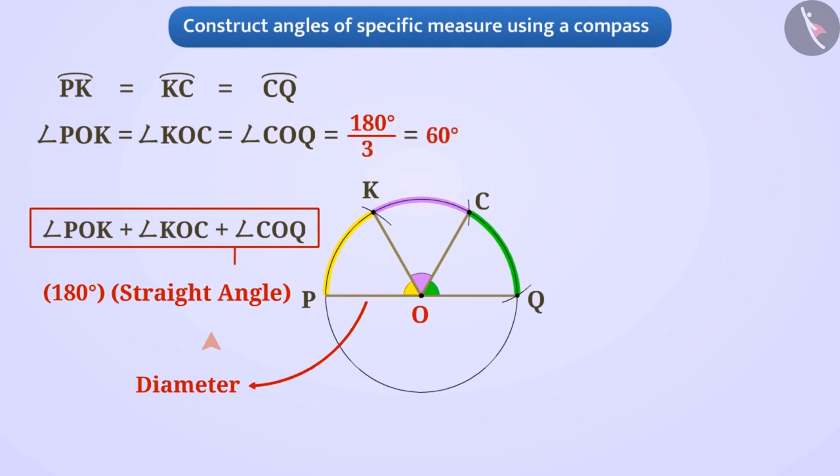So will you be able to think of any method of drawing an angle of 60 degrees using a compass?